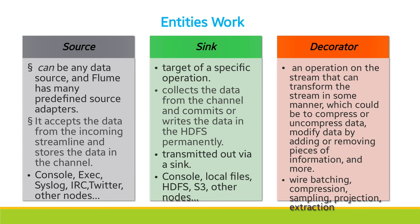Flume uses three strict concepts: source, sink, and decorator. Source is any data source — it accepts data from an incoming stream and stores it in the channel. Examples include console, executable file, system log file, and Twitter file. Sink is the target of a specific operation — it collects data from the channel and commits or writes the data to HDFS permanently. Examples include console, local files, HDFS, S3, and other nodes.